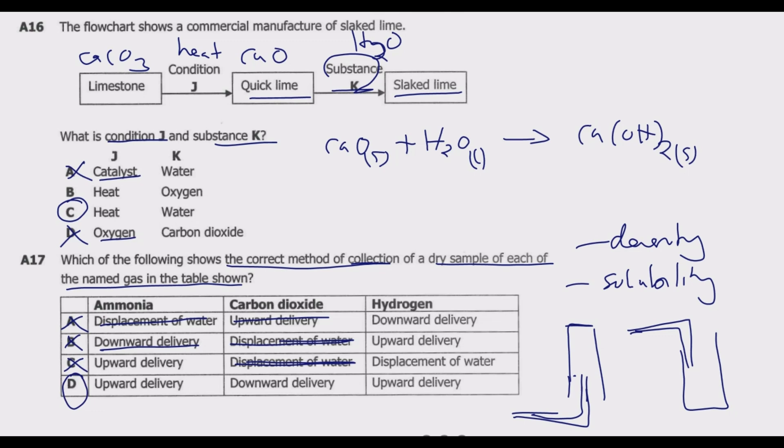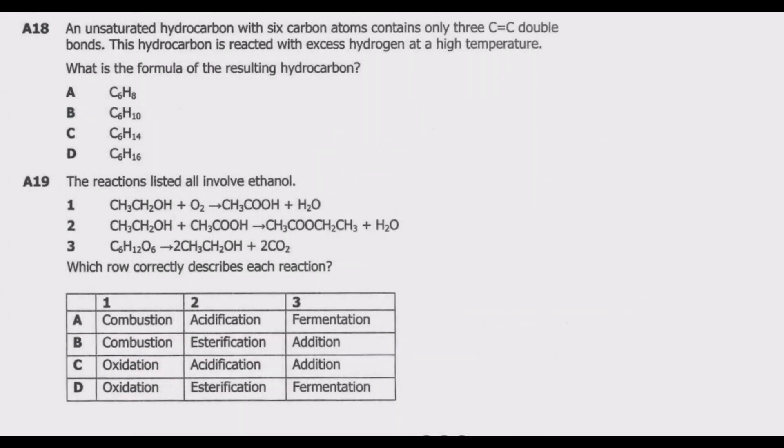Let's confirm with hydrogen. Hydrogen is less dense than air and is also insoluble in water. If any of these was collected, we could use water displacement, but it is less dense than air, so it will be upward delivery. You notice that D is the correct answer. These are the key combinations you need to use to get question 17 correct.